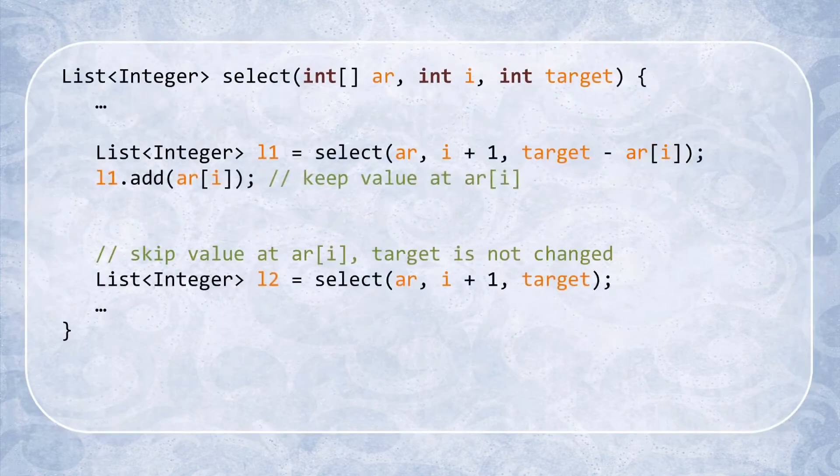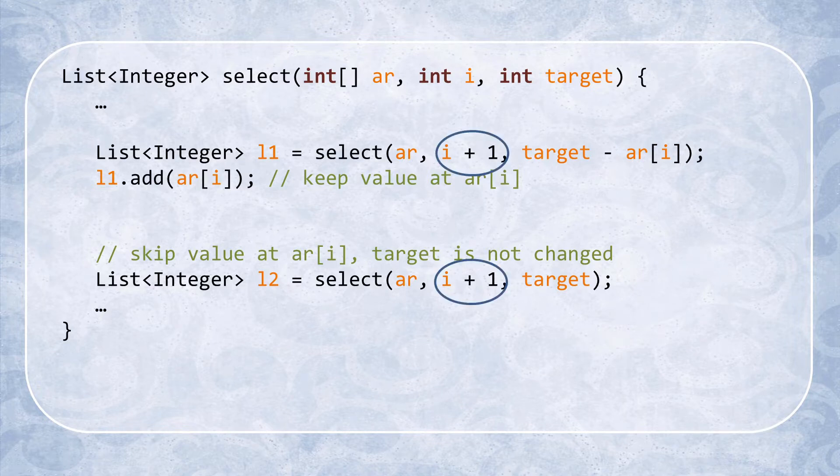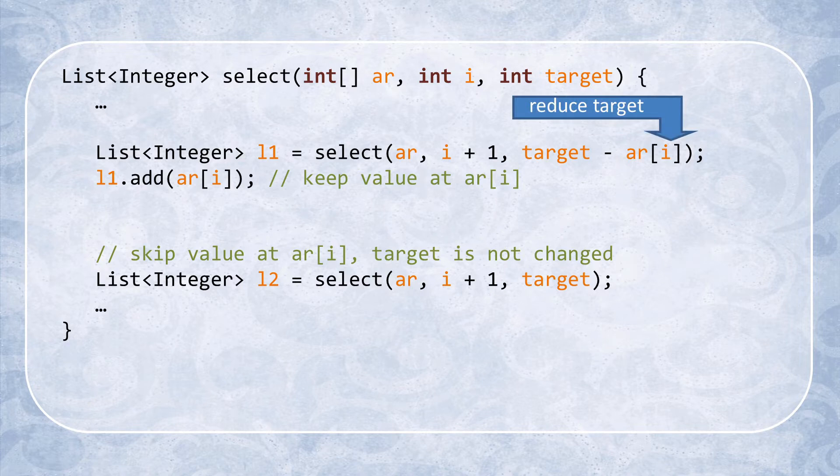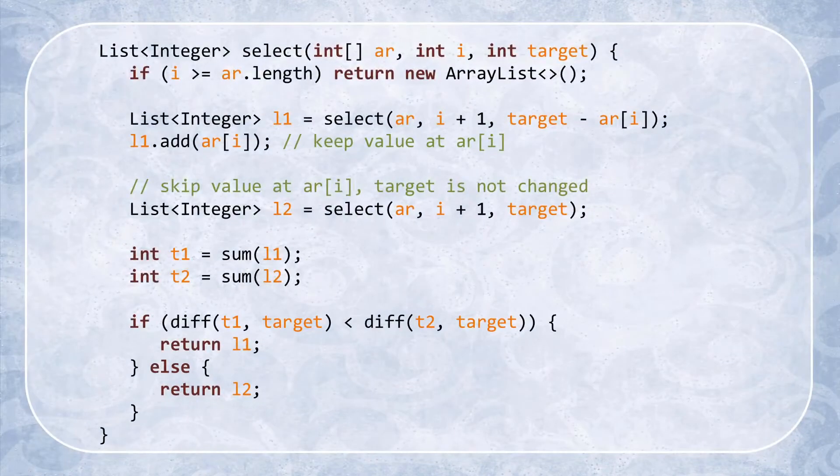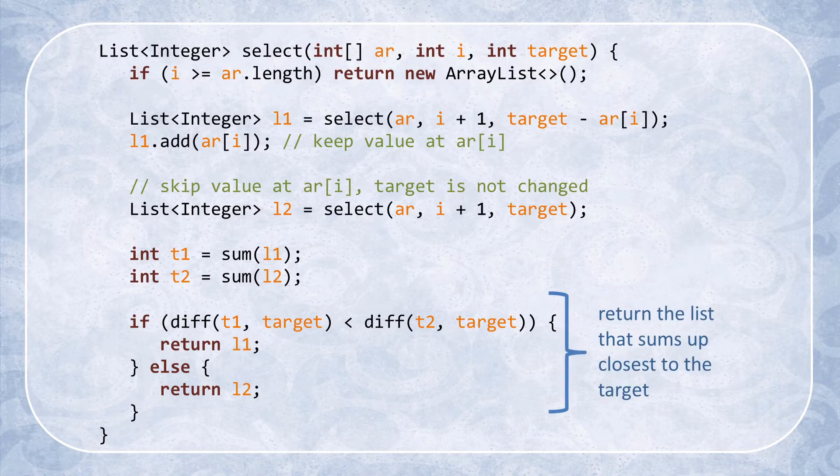Suppose we already have a magically implemented function that somehow returns an optimally selected list of values that add up to a desired target. Then, we can call this function twice to check both of the possibilities. All that is left to do now is check which of the two lists comes closer to the target and return the best one.